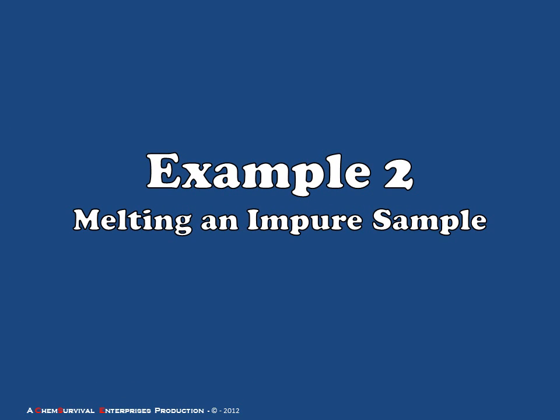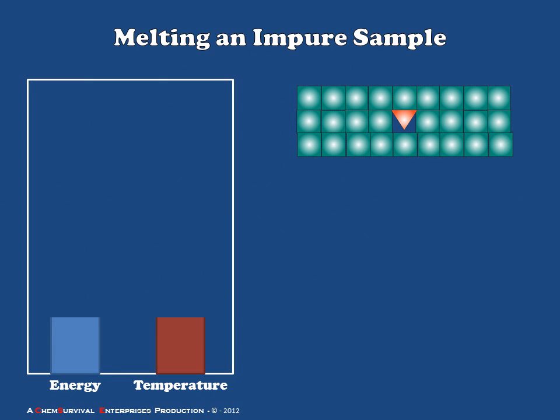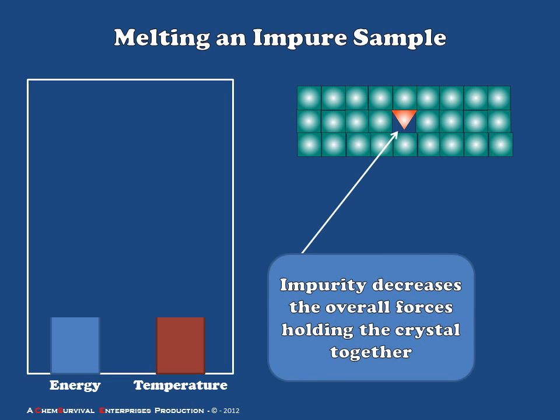Now let's consider a second example in which we have a crystal that contains an impurity. Shown here is a figure very similar to the one we just looked at, but with one important exception: the presence of one molecule of impurity within this particular volume of the crystal. Notice that this molecule of impurity doesn't fit as well into the crystal lattice as the other molecules of our desired compound. This is a metaphor for the compromised intermolecular forces around that particular site — the intermolecular attractions between the impurity and the surrounding bulk crystal are decreased. Overall, this means the crystal is held together by fewer or weaker intermolecular forces than in the pure version.